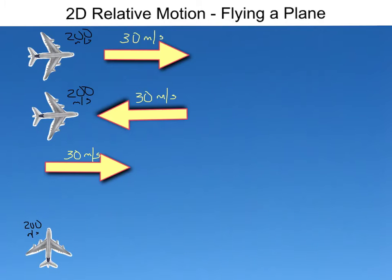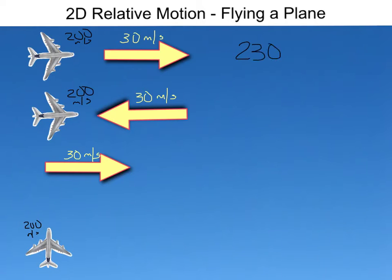Two-dimensional relative motion — flying a plane. Just as in the example with the T in one-dimensional, let's look at if our airplane was flying due east at 200 meters per second and was encountering a tailwind of 30 meters per second also east. We would combine these motions together and get a resultant motion of the plane of 230 meters per second to the east.